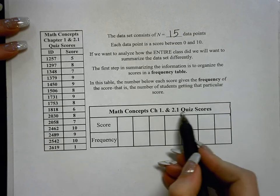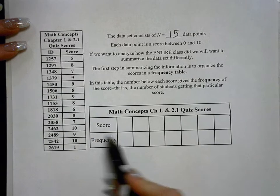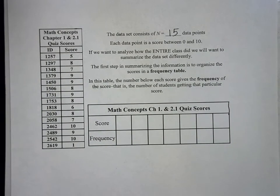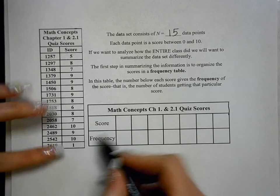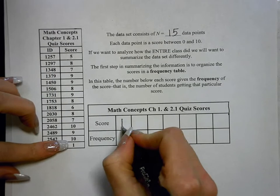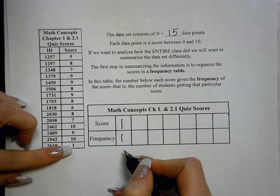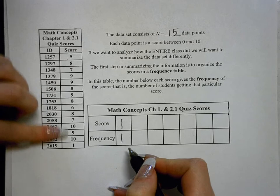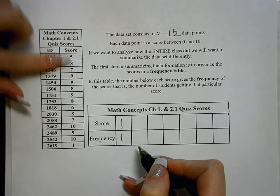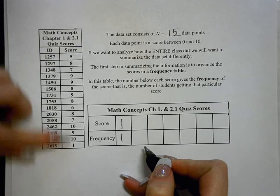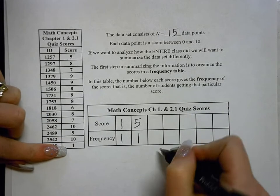So Math Concepts Chapter 1 and 2.1 Quiz Scores. All of the scores are listed in this row and below are the corresponding frequencies. So you only list scores in which the students obtained. So here there's a score of a 1, so I'm going to list that. And there's only one person that scored that. So the frequency of that score is 1. Now nobody scored a 2, so we do not put that in our frequency table.